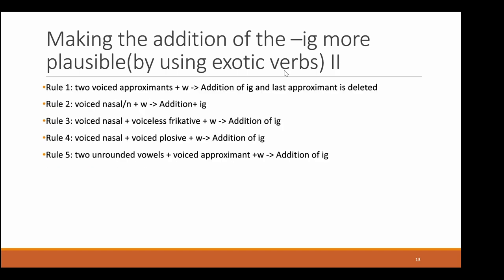In total I have found five rules for when the IG is added. Rule one: two voiced approximants with a W. Rule two: a voiced nasal other than N — for example an M — plus a W, adding an IG. Or a voiced nasal and a voiceless fricative and a W — also an IG. Or a voiced nasal and a voiced plosive like P — also an IG. Or two unrounded vowels like A and E, and a voiced approximant like L and W — also adding an IG.